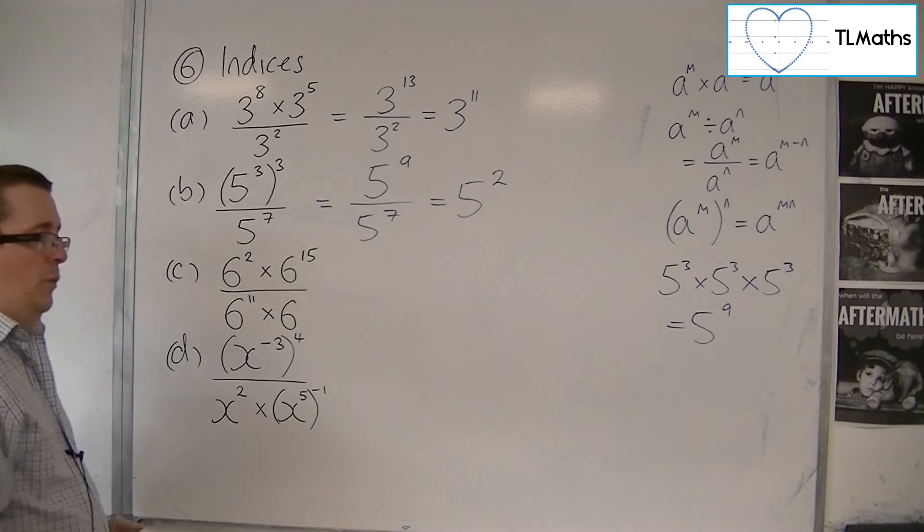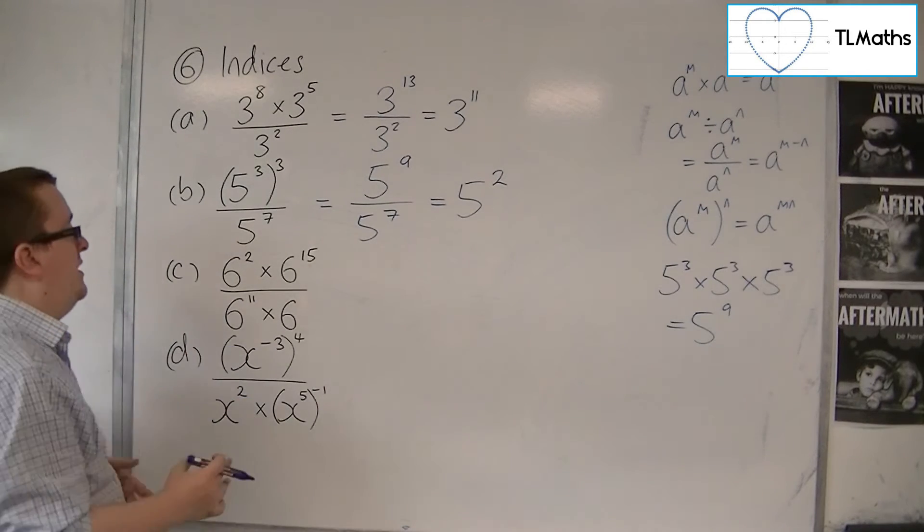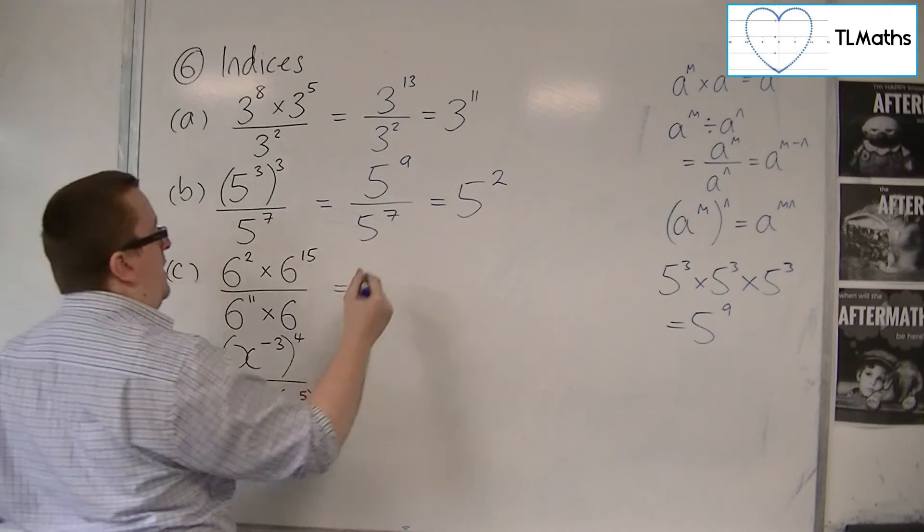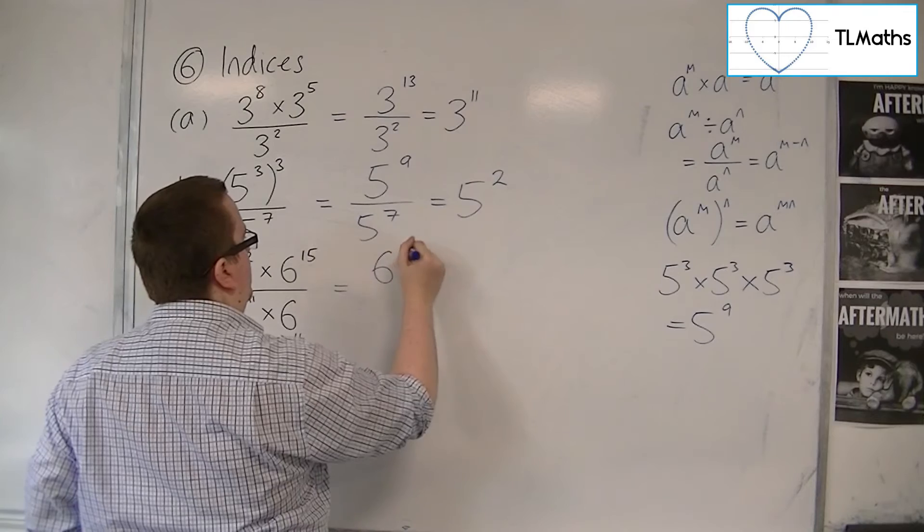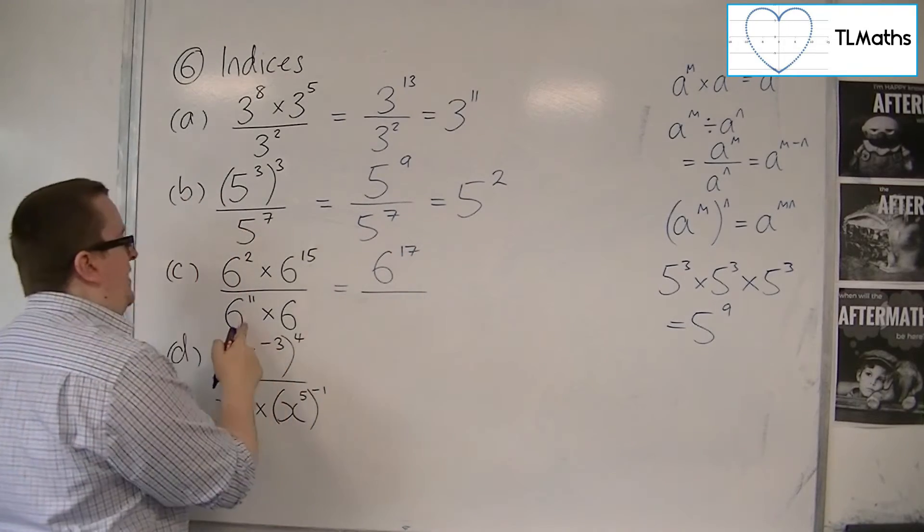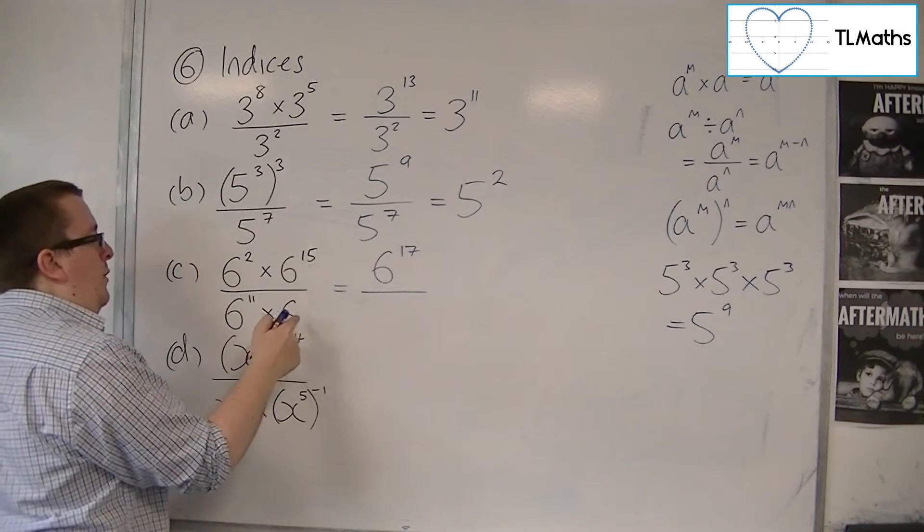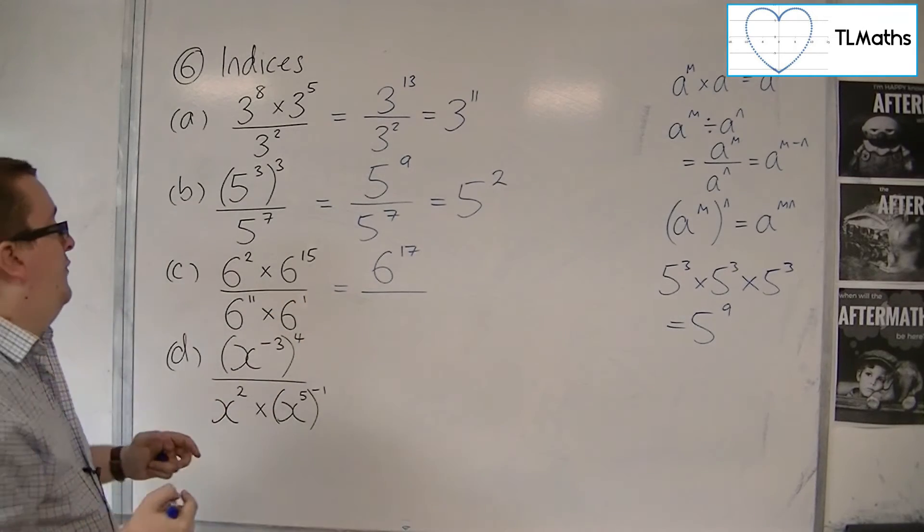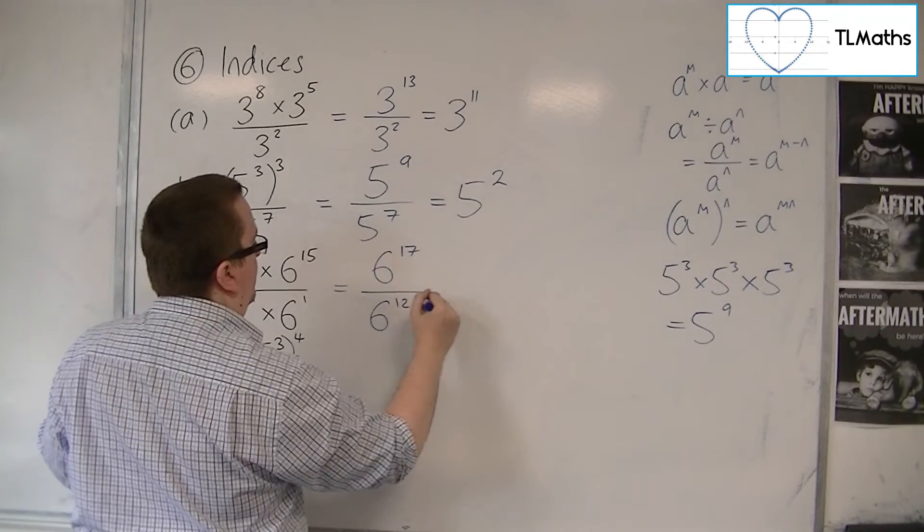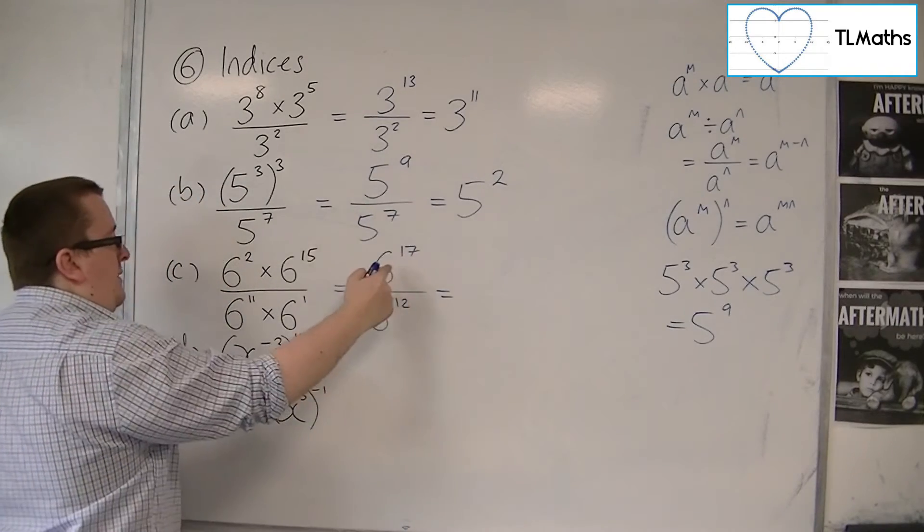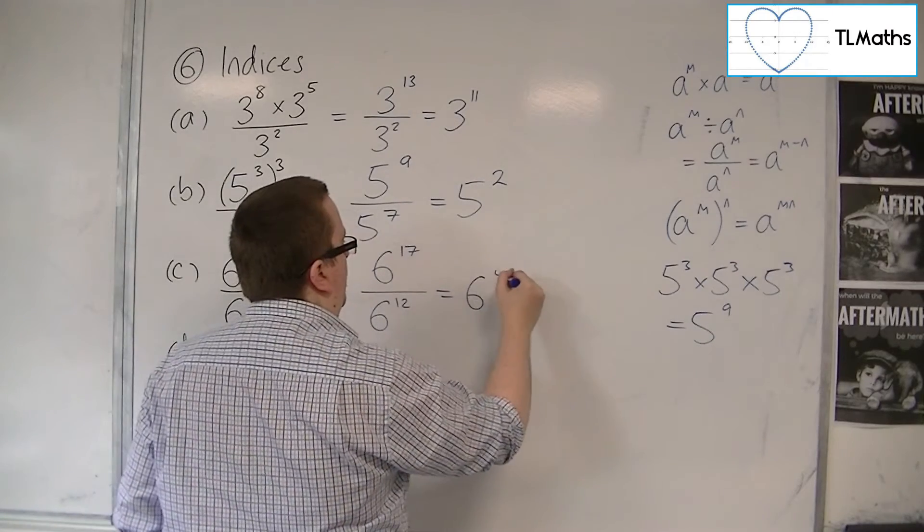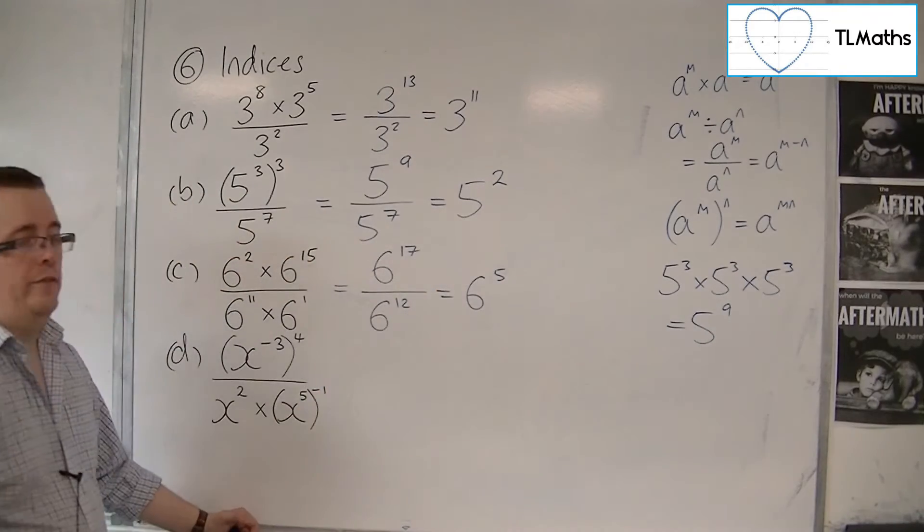For part C, we'll take each bit individually, the numerator and the denominator. 6^2 × 6^15 equals 6^17. In the denominator, 6^11 × 6 - well, if you just have 6 by itself, it's 6^1 - gives us 6^12. So 6^17 ÷ 6^12 equals 6^5, since 17 - 12 = 5.